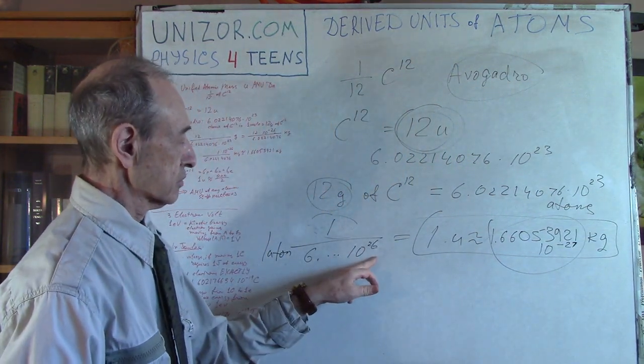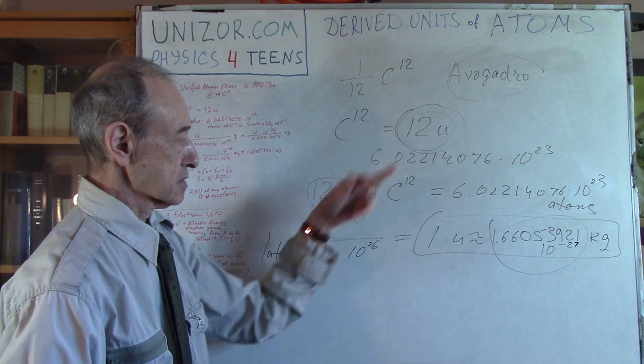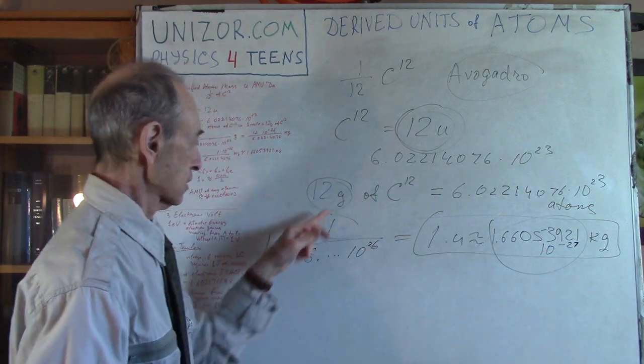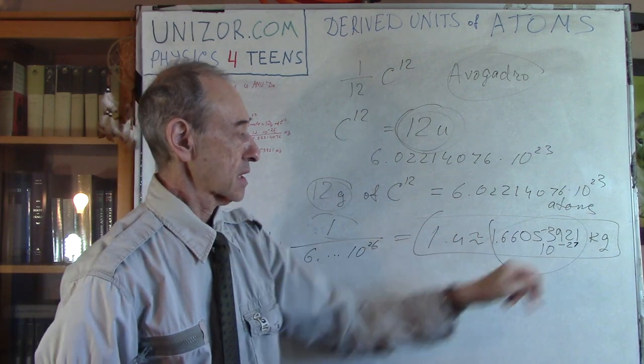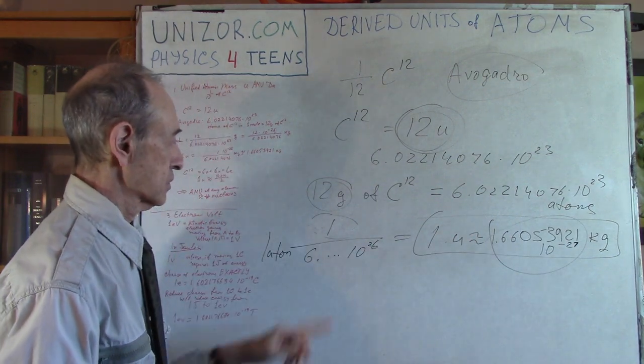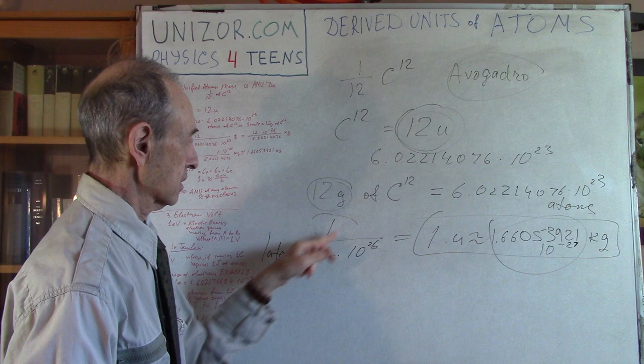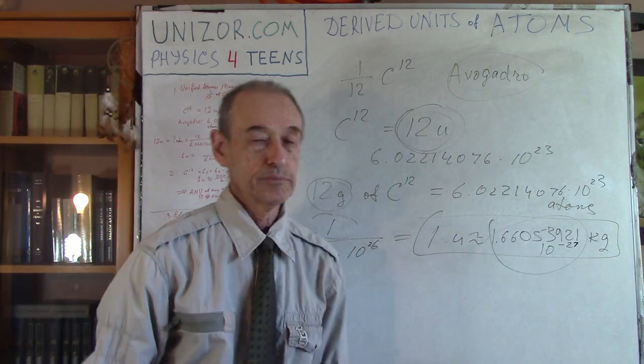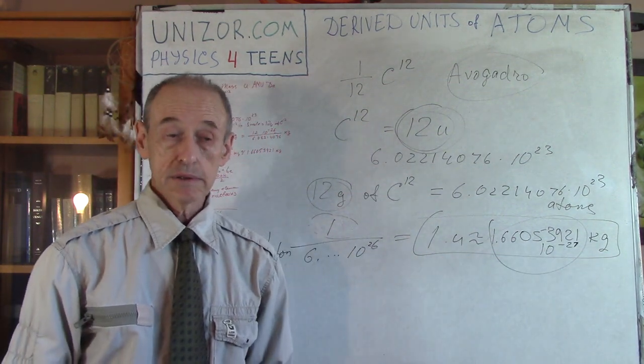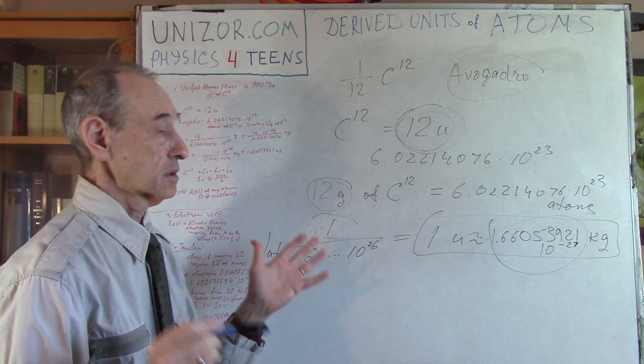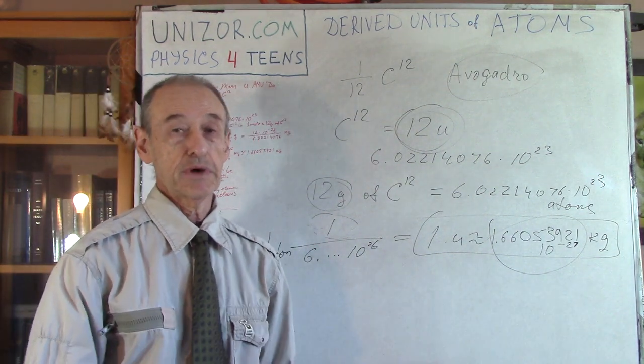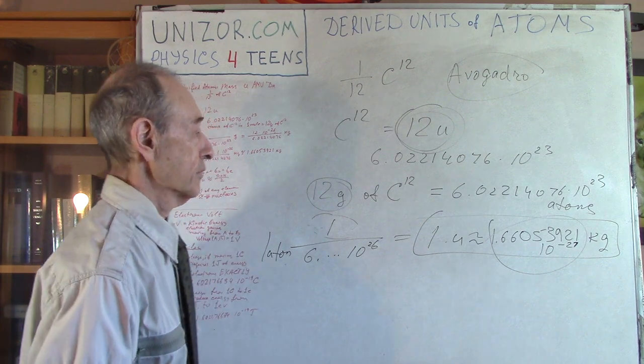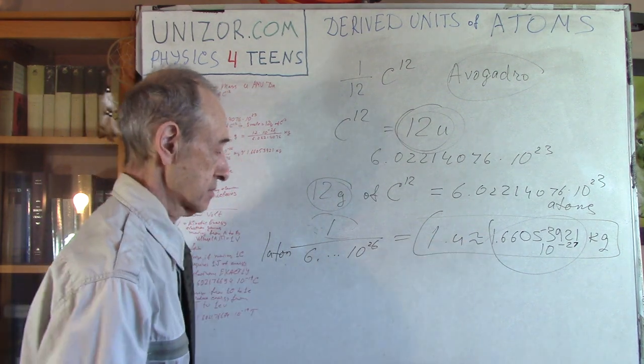Oh sorry, 10 to minus 27. Because this is 10 to 26 in denominator, so that's where it goes 10 to the minus something, and 1 over 6 would be... I multiply by 10, so that's why it's minus 27. So it's 10, and that's 27, and that would be 1.6 blah blah. So this is one unified atomic mass unit in kilograms. So it's a straight direction, just a number, just a factor. That's it about atomic mass unit, or Dalton, or unified atomic mass unit. That's how it is in kilograms.